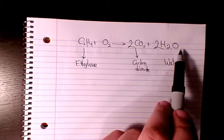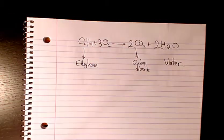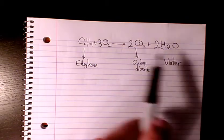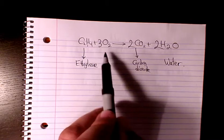Oxygen, we have two times one which is two, two times two, four. So four plus two is going to be six. Here we have two, so we need to put three in here. So everything is balanced now: carbon, hydrogen, and oxygen. So one mole of ethylene reacts with three moles of oxygen.